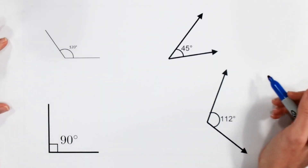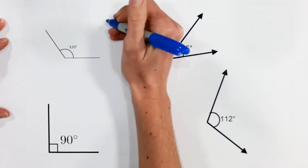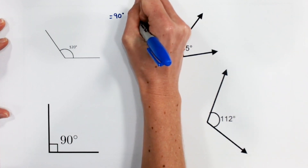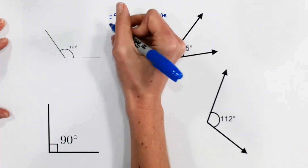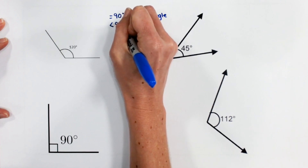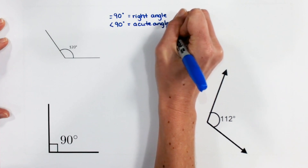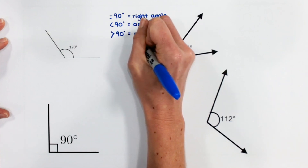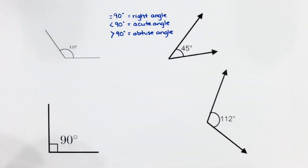Let's take a look at a few more sample problems. Here I have quite a few angles that we're going to classify. Before we begin, let's just quickly write our rules up here. So if we have an angle that is equal to 90 degrees, that would be our right angle. If we have an angle that is less than 90 degrees, that's an acute angle. And finally, we're looking for any angles that are greater than 90 degrees, which would give us an obtuse angle.